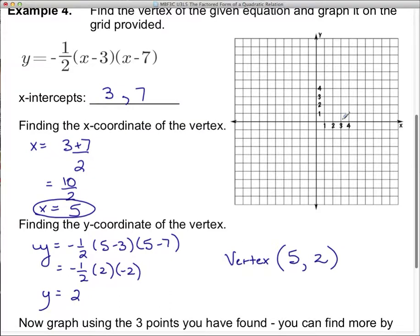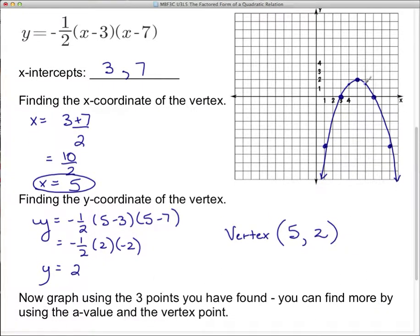So the vertex is at 5, 2, right there on the grid. The x-intercepts are at 3 and at 7. We know it's opening down with that negative one-half. Going over 4 from the vertex, normally I'd go down 4 squared which is 16, but I take half of that — so I go down 8. That gives me additional points. Over 1 will be down a half too. There's our graph. The question said to graph the three points found and use the a-value and vertex to find more, which we did. That concludes this video.